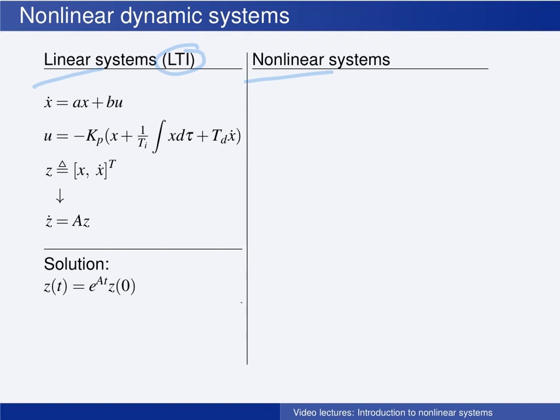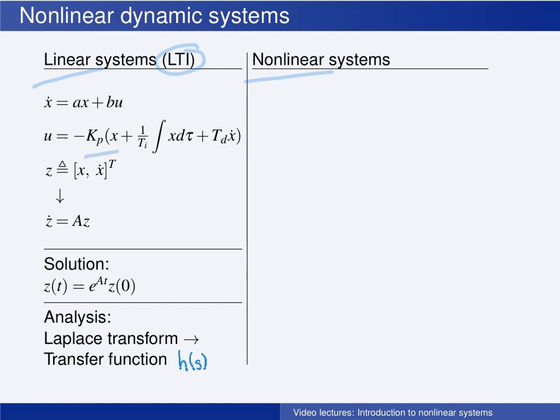And to analyze such systems, you have seen how using the Laplace transform gives you the system transfer function, which we often call H, which you can use for step response analysis and frequency response analysis of your control system, thus making a good choice for the control parameters, the gain kp, the integral time ti, and the derivative time td.